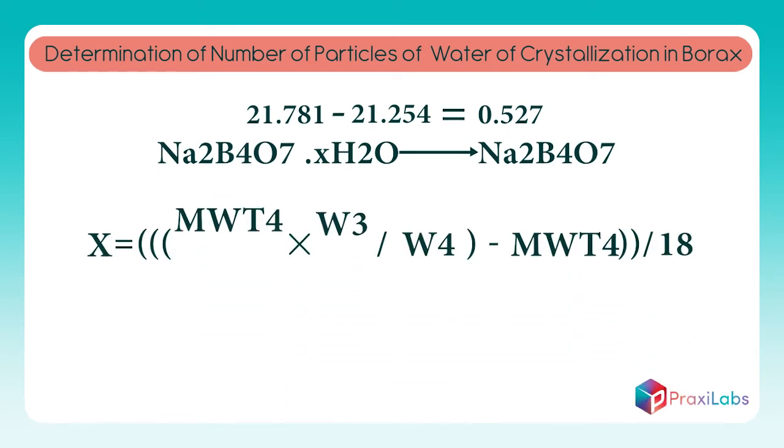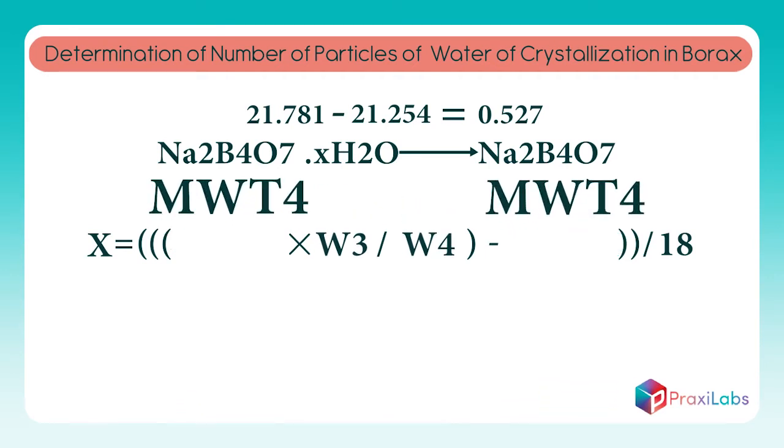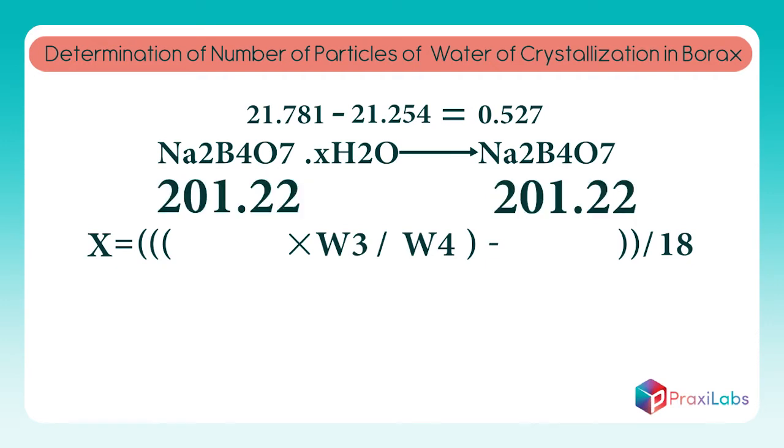Write the values of the inputs and outputs of the process. The molecular weight of the anhydrous borax takes sign MWT4 and equals 201.22.